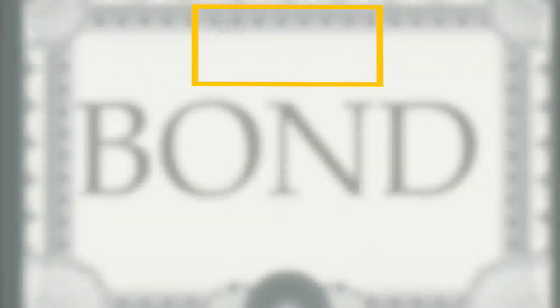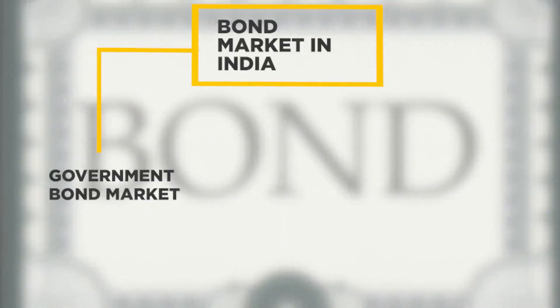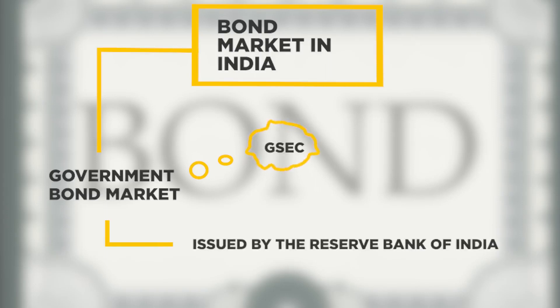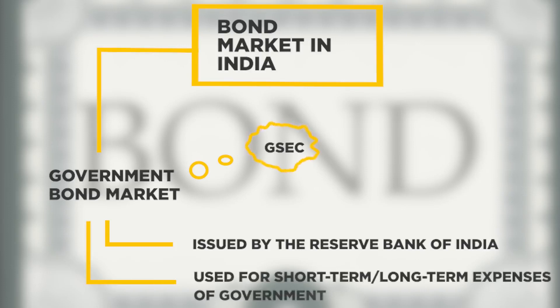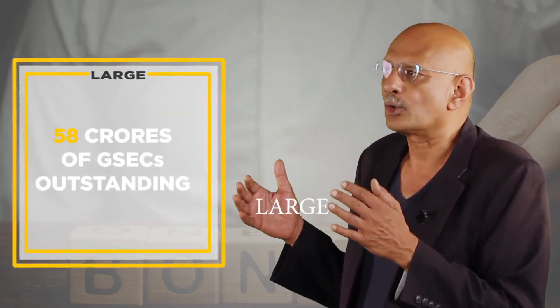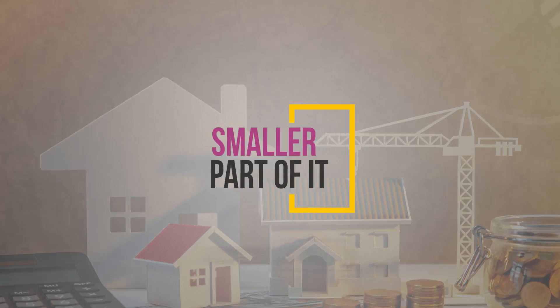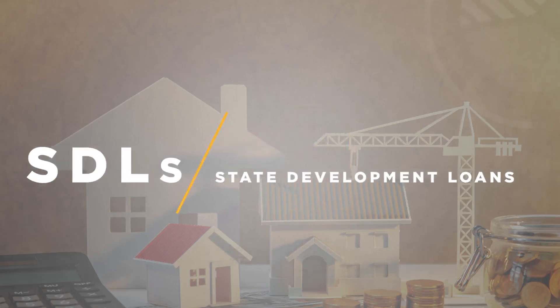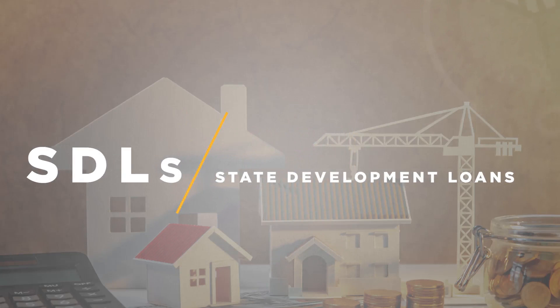The bond market in India is made up of two segments. The biggest and most dominant segment is the government bond market, known as the GSEC market. These are securities issued by the Reserve Bank of India on behalf of the government, and the money received is used to finance its short-term and long-term expenses. Currently about 58 lakh crores of these GSECs are outstanding. A slightly smaller part is state-level borrowing, known as SDLs or state development loans, which are different states in the Union borrowing money to finance their operating and investment needs.